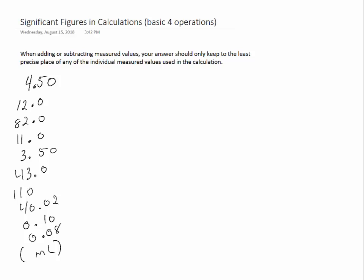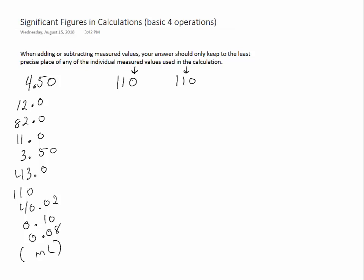Hopefully you said 110 milliliters is the least precise measurement. When we measured that value, we used a graduated cylinder precise to the ones place. Even if you forget how it was taken and say it's precise to the tens place, that's still the largest place out of all these values. All the other measured values are precise to the hundredths or tenths place, and those places are smaller, so they're more precise.